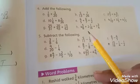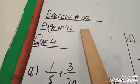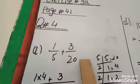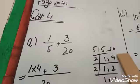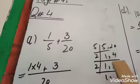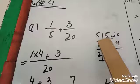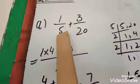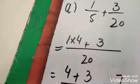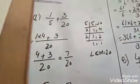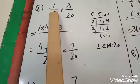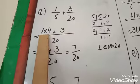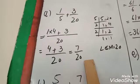Next question we will solve on the whiteboard. Exercise 3A, page number 41, Question number 4: add these fractions. These fractions have different denominators, so we take LCM of 5 and 20. LCM is 20, so we write 20 in the denominator. First value is 5 — 5 times 4 is 20, so we multiply 1 by 4 to get 4. Plus 3, as it is since the denominator is already 20. So 4 plus 3 equals 7/20, which is your answer.